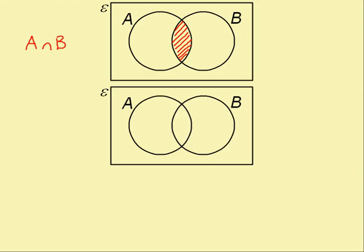The next special piece of notation is this. And it looks a little bit like a lowercase u. This means the union of A and B.